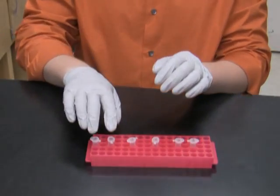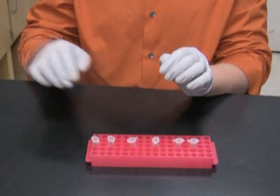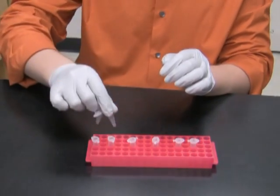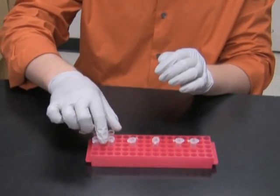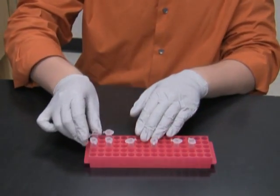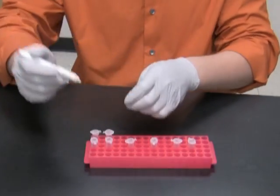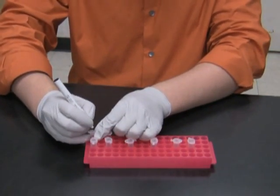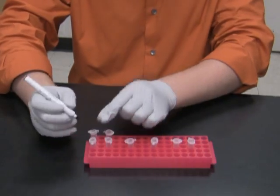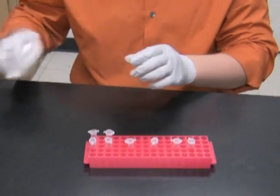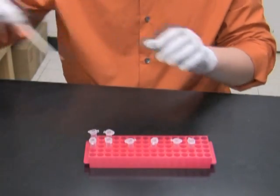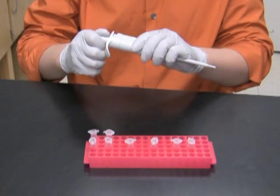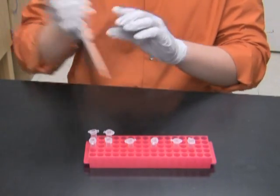Now I'm going to split the contents of the ligation tubes into two aliquots. Here I have two new tubes. One of them I will label as vector plus insert, another one as vector control, and I will transfer 10 microliters from each of the ligation tubes into its replica.